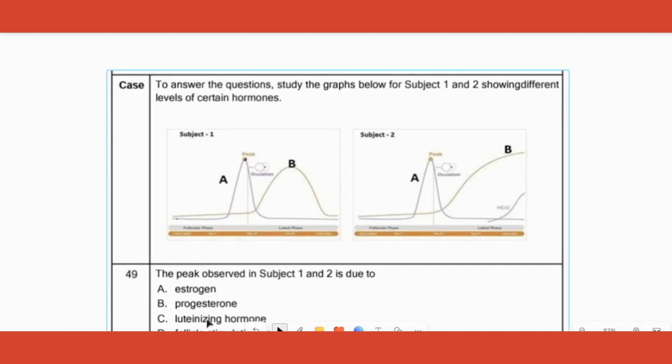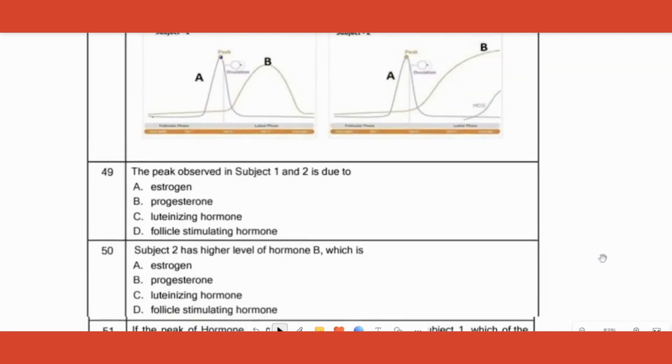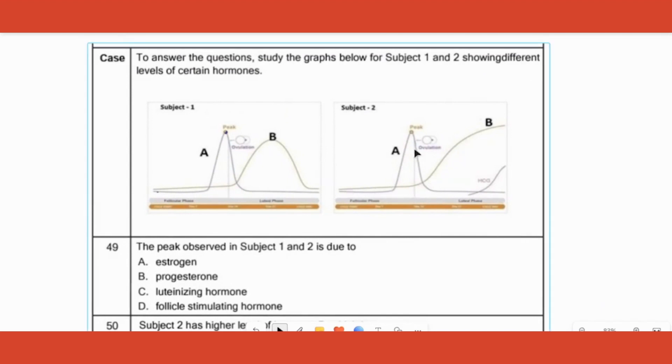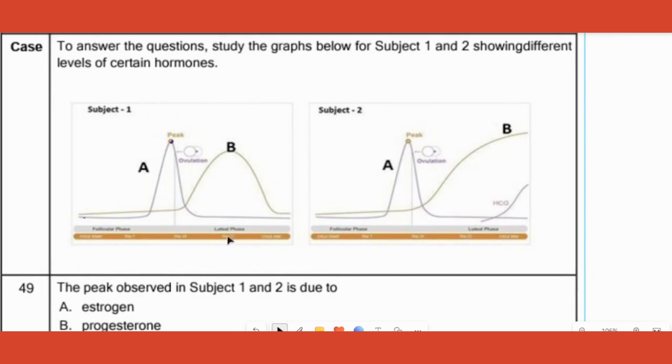First question: the peak observed in subject 1 and subject 2 is due to? So how do we know which is the peak? This is the peak because they have already written peak on it. How do we know this? By looking at this term given here called as ovulation. During ovulation which hormone peaks?